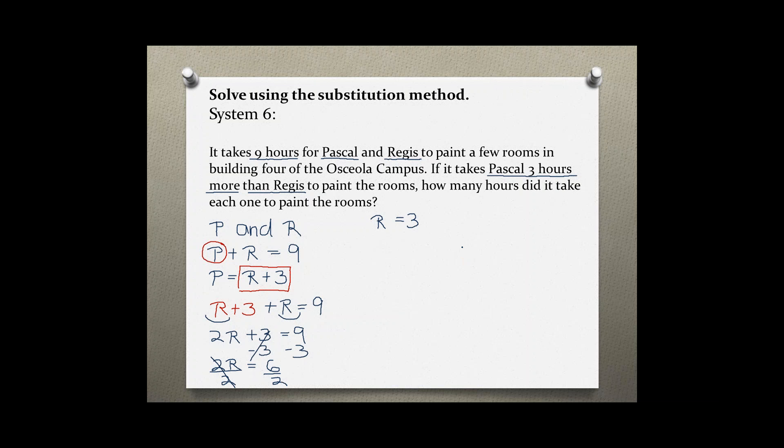It took Regis three hours to paint the room. Now using this information and substituting it in for either one of the original equations, we should get the amount of hours it took Pascal. In this scenario I feel the first equation is the easier one. I'm going to substitute three into the first equation.